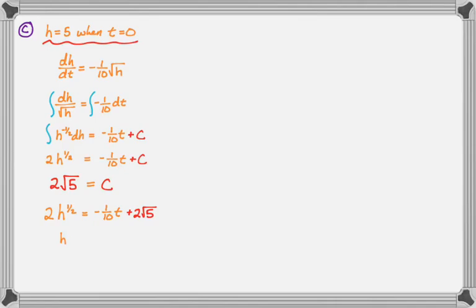Yeah, h as a function of t. So divide through by two to get negative one tenth t plus root five, square both sides, and I get this. And then there you go. That's h as a function of t. So that's actually my answer. All right, so that's the entirety of the question. I hope you found this helpful and good luck.